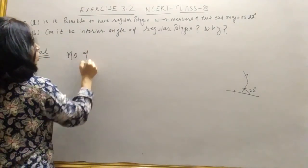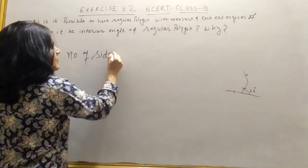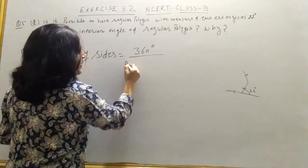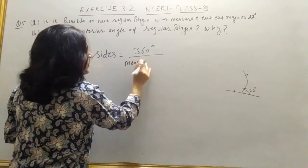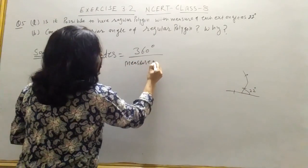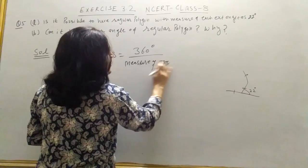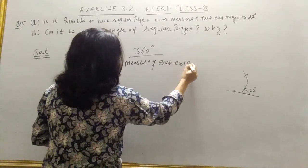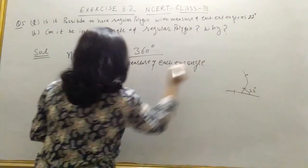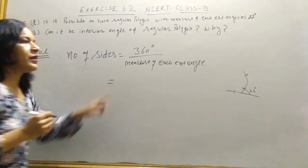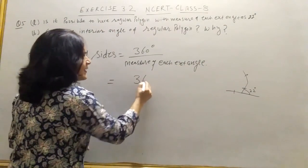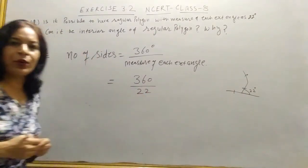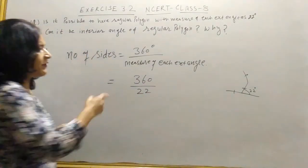Number of sides equals 360 degrees divided by the measure of each exterior angle. So 360 degrees divided by the given exterior angle of 22 degrees. If we simplify it,